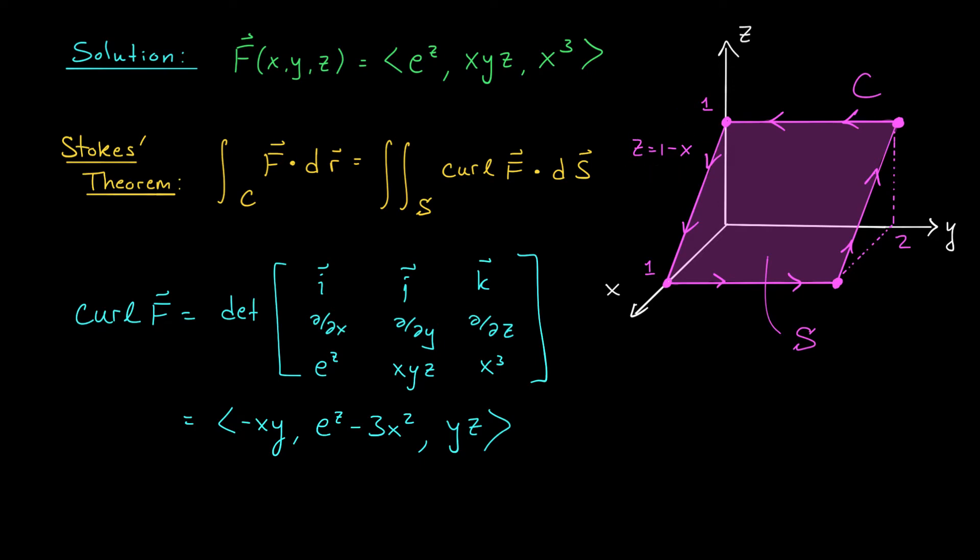Of course, S is only part of the plane. It's the part where x is between 0 and 1, and y is between 0 and 2. Since S comes from the graph of the function z = f(x,y) = 1 - x, we can use our nice, easy parametrization. S is given by r(x,y) = <x, y, 1-x>, where x goes between 0 and 1, and y between 0 and 2.